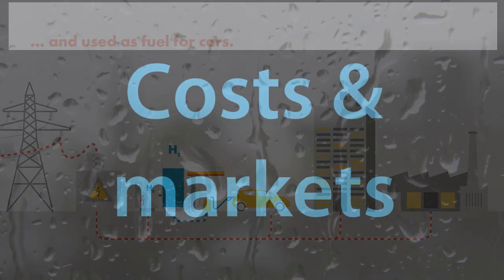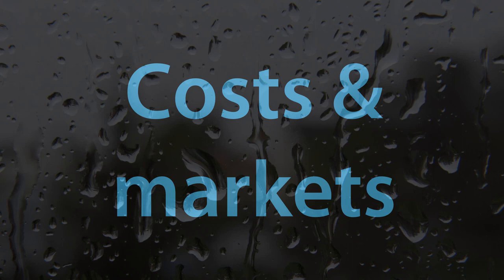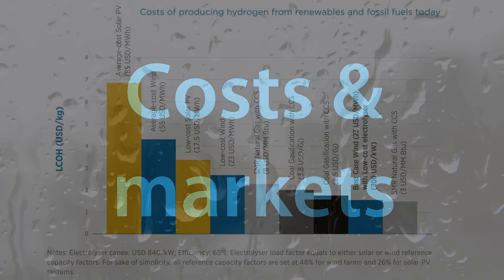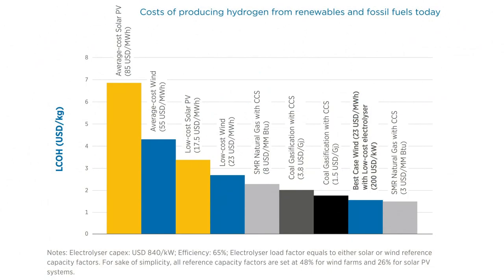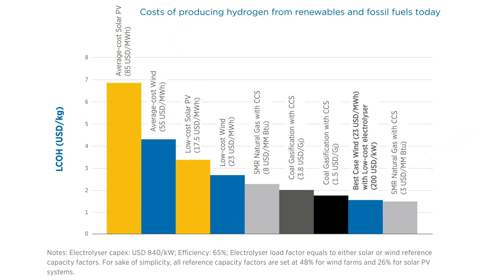Let us now take a closer look at hydrogen prices, costs, and markets. This diagram shows the costs of producing hydrogen from renewables and from fossil fuels. It teaches us a number of essential aspects. First, there is nearly a factor of six in cost difference between the lowest and the highest price for producing hydrogen. Second, the lowest price is currently achieved by steam gas reforming of natural gas, which is also how most of the available hydrogen is globally produced.